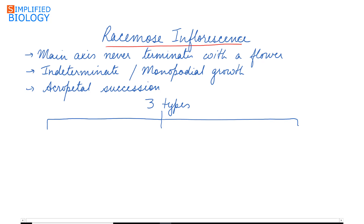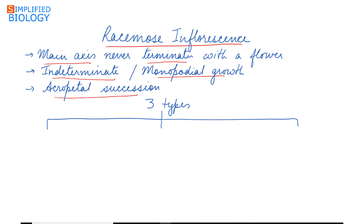As studied in the last video, in the case of racimose inflorescence, the main axis never terminates with the flower. Growth is indeterminate, also known as monopodial growth, and the flowers develop in acropetal succession — that is, the lower flowers are older and the upper ones are younger. This applies to all types of inflorescence under racimose.